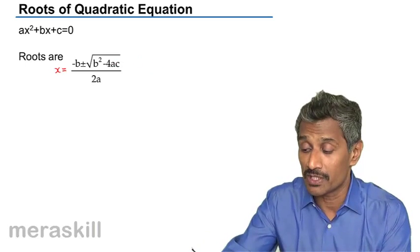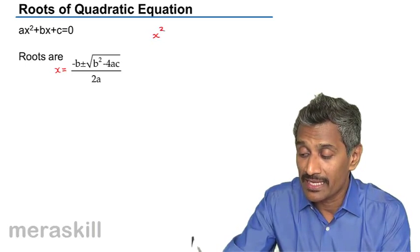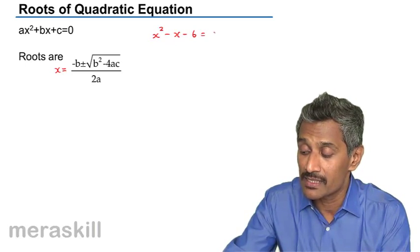How do we apply this formula? Let's get back to the equation we did: x² - x - 6 = 0.